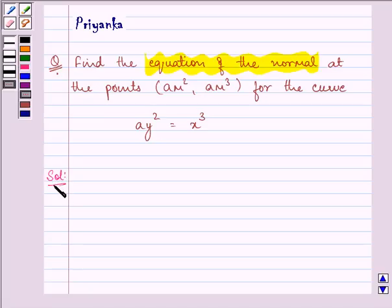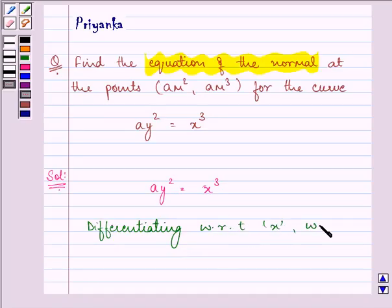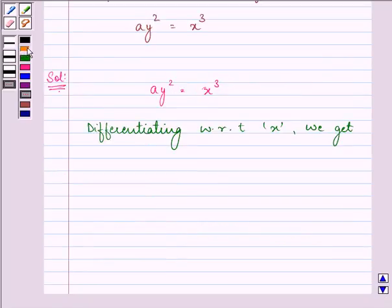Let us rewrite the equation of the curve once again. Now, on differentiating with respect to x the above given equation, we get 2ay(dy/dx) = 3x².